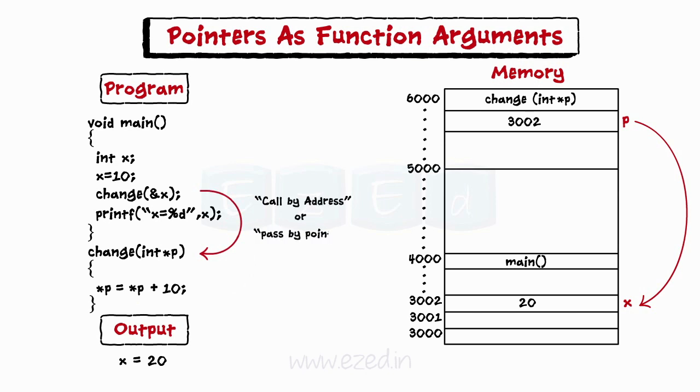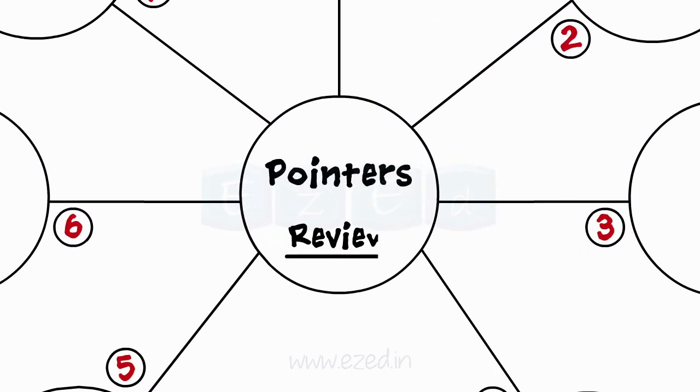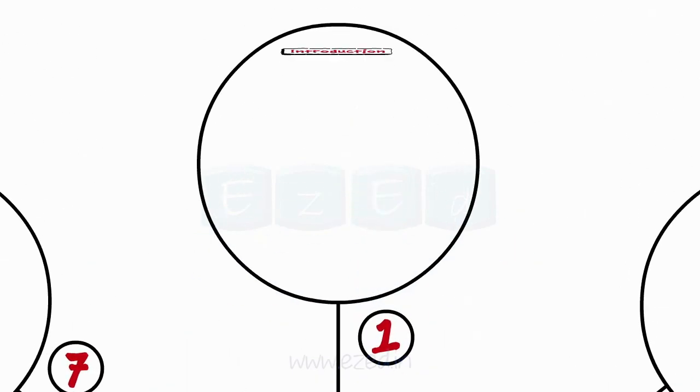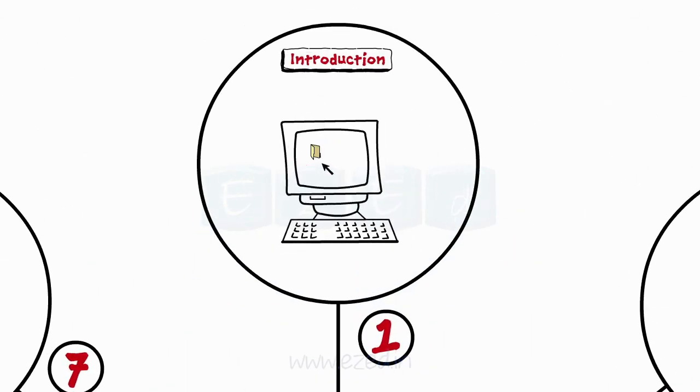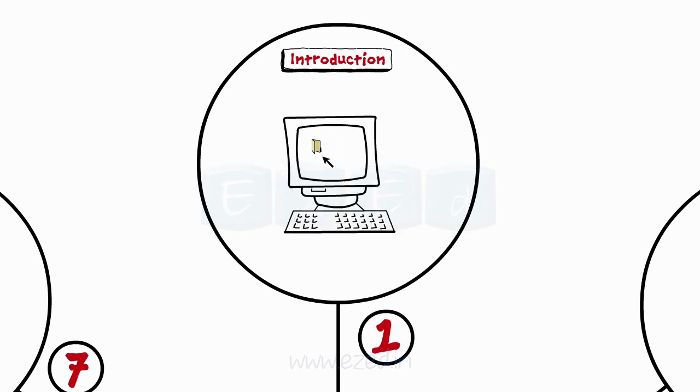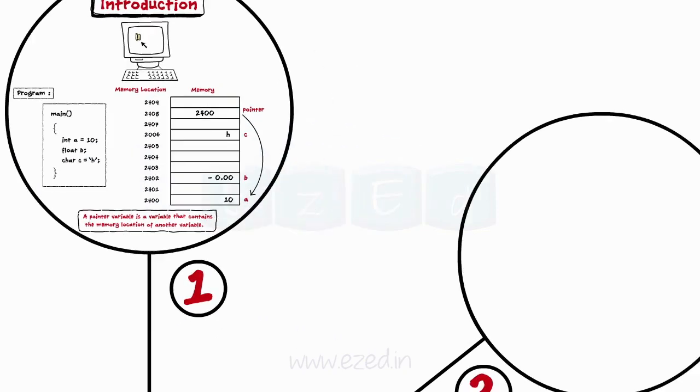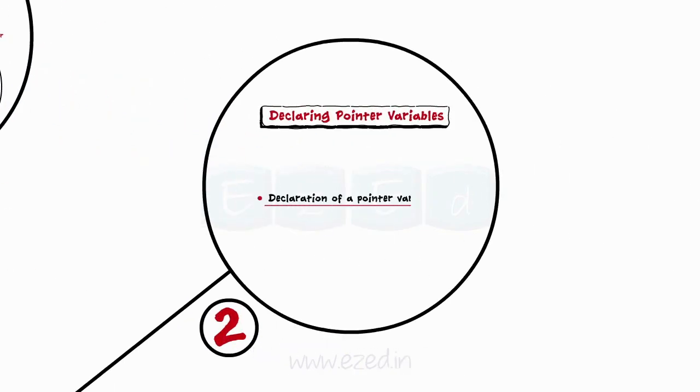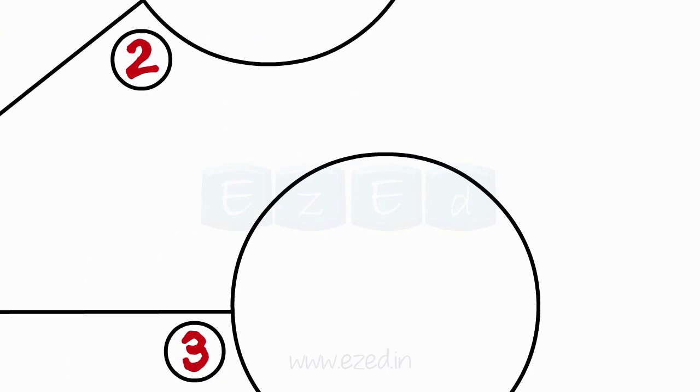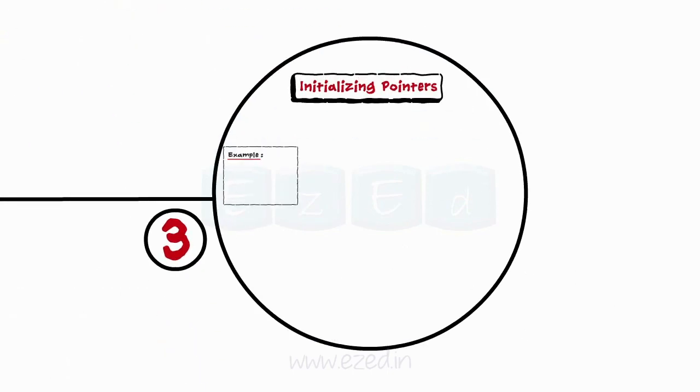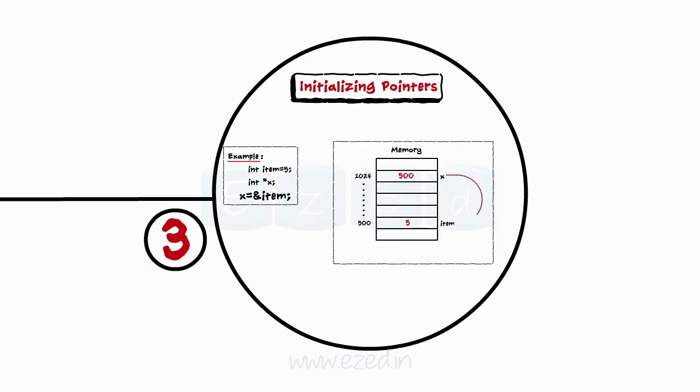Now, let us have a quick review of what we have learnt in this chapter. First, we learnt what pointers are. They are used to point something. Pointers in C are variables that point to another variable. Pointers hold the memory address of another variable. The general form of declaring a pointer variable is this. Next, we learnt how to initialize pointers. The pointer variable can be initialized by assigning the address of another variable to it. The unary operator asterisk is called as dereferencing operator.